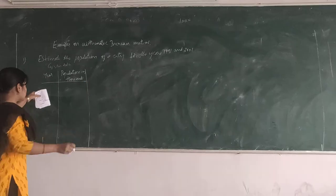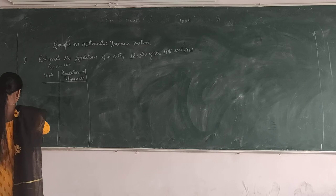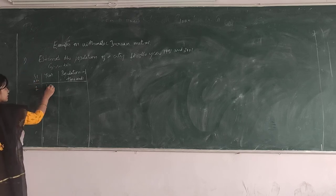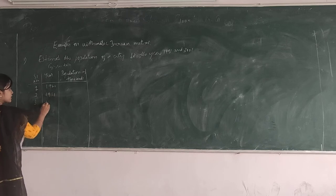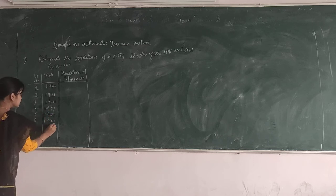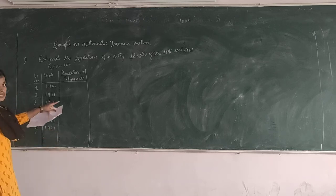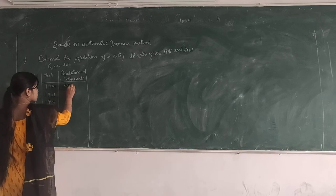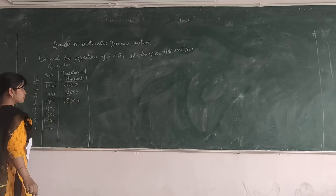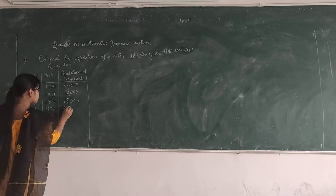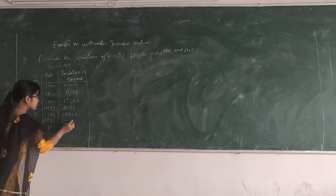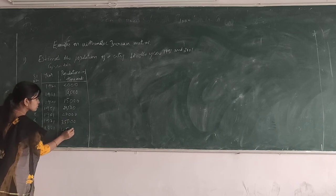The given data starts from year 1921. The years are: 1921, 1931, 1941, 1951, 1961, 1971, and 1981. The corresponding populations are 6,000; 10,000; 15,000; 20,500; 27,000; 35,500; and 45,000 respectively.